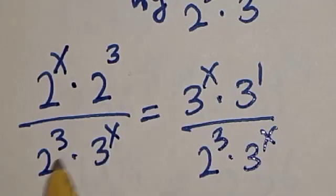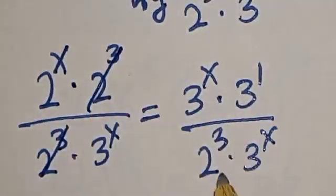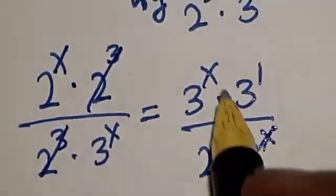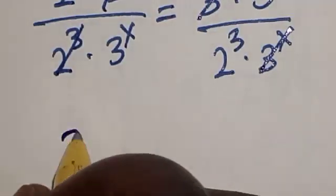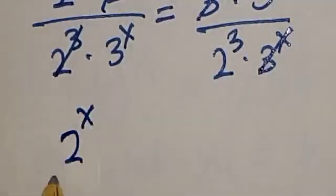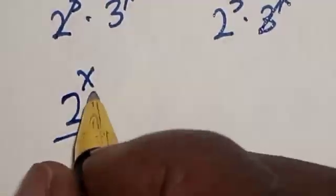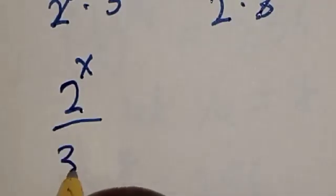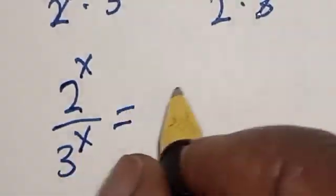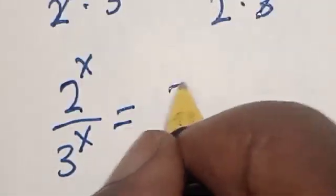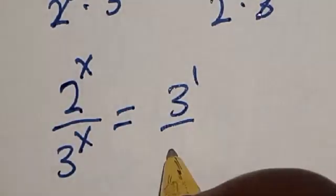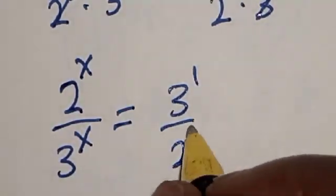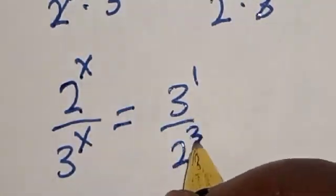Now we have 2 raised to the power 3 here — this one will cancel this, and this one will cancel this. So 2 raised to the power s divided by 3 raised to the power s is equal to 3 raised to the power 1 divided by 2 raised to the power 3.